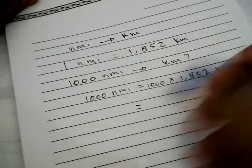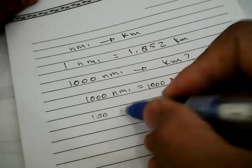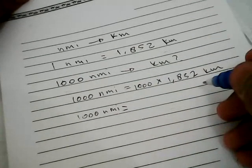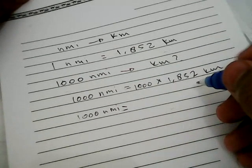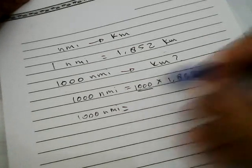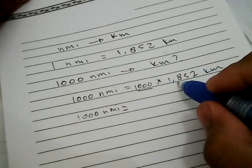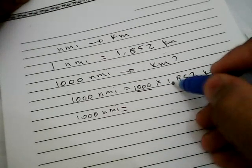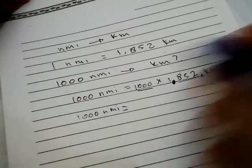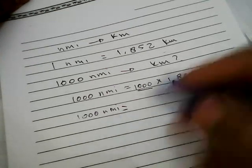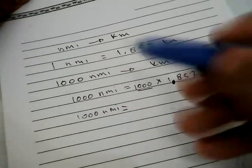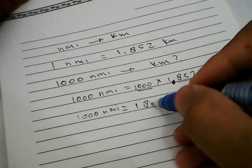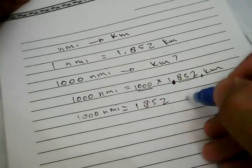So the result of this equation is: 1,000 nautical miles is equal to... it has three zeros, has three numbers, and we need to move the comma over here. So the result of 1,000 nautical miles converted into kilometers is equal to one thousand eight hundred and fifty-two kilometers.